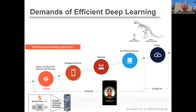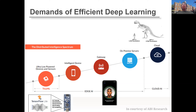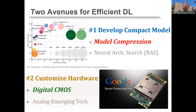These challenges create demands for efficient deep learning across the entire intelligence spectrum — from edge and mobile devices using TinyML frameworks like TensorFlow Lite, to mobile gateways, servers, and cloud data centers. The need for efficient deep learning is critical in both the inference phase and the training phase.